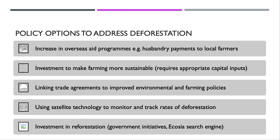What can be done about it? Let me pick out one or two policy options to research and explore in more detail. One is to link the aid programmes of rich advanced countries to deforestation reduction, for example offering husbandry payments to local farmers to look after the forest and reduce the rate of depletion. Another could be to invest in making farming more sustainable — using appropriate capital inputs to improve irrigation and make industrial farming a little more sustainable and inclusive.